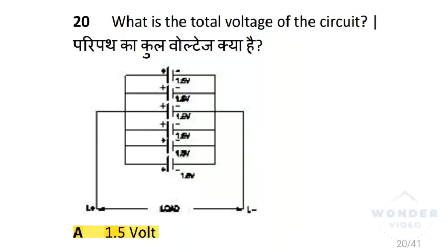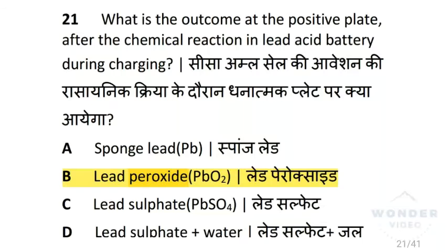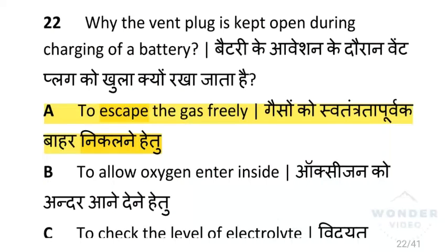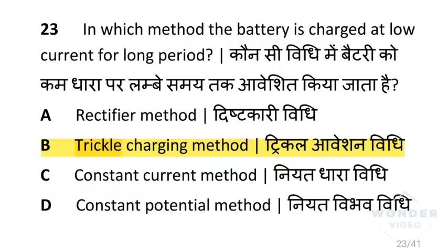What is the total voltage of the circuit when connected in parallel? After calculating, that is 1.5 volts. What is the outcome at the positive plate after the chemical reaction in a lead acid battery during charging? That is lead peroxide. Why is the vent plug kept open during charging of a battery? To allow gases to escape freely. In which method is the battery charged at low current for a long period? That is the trickle charging method.